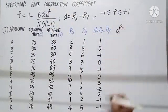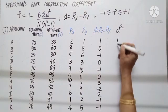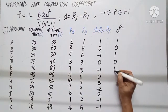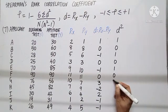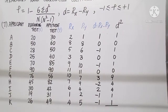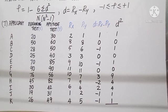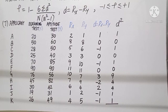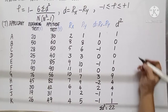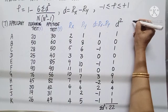Squaring all the D values, we get: 1, 0, 1, 0, 1, 0, 4, 4, 4, 1, 1. Finding the total of D squared, we get sigma D squared equals 22.